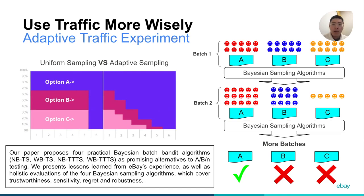Our paper proposes four practical bandit sampling algorithms to wisely allocate traffic for every new batch. Especially, we look deeper into the trustworthiness challenges and present a holistic evaluation covering trustworthiness, sensitivity, regrets, and robustness.